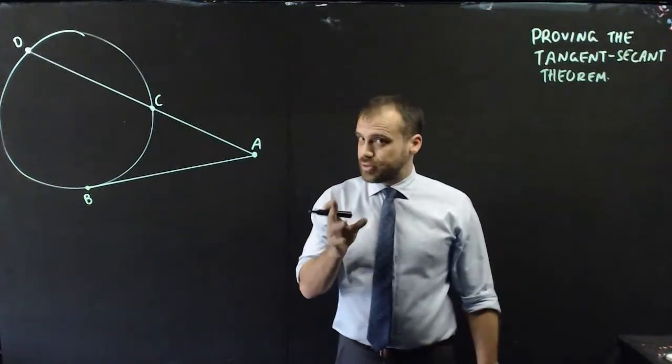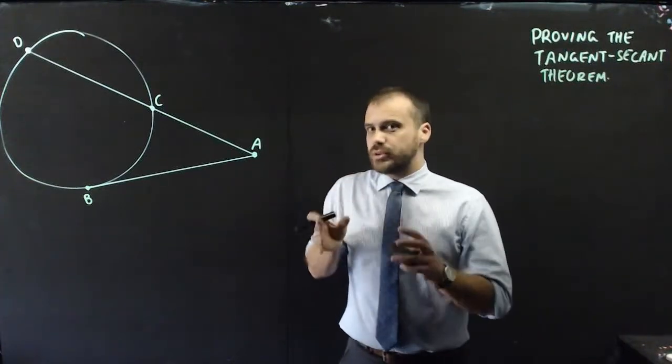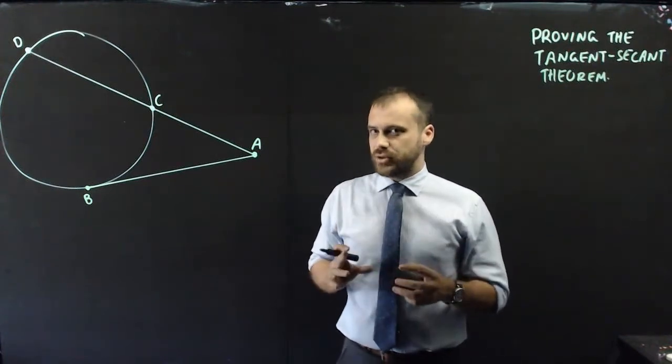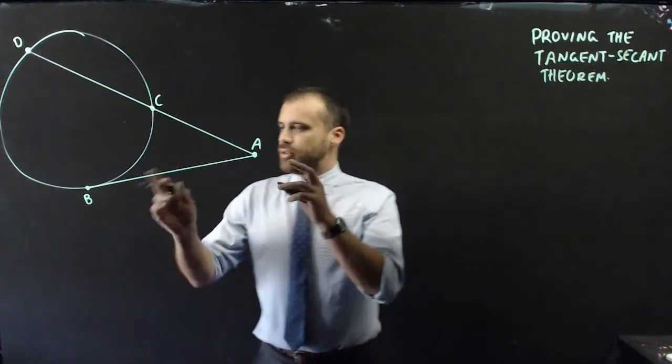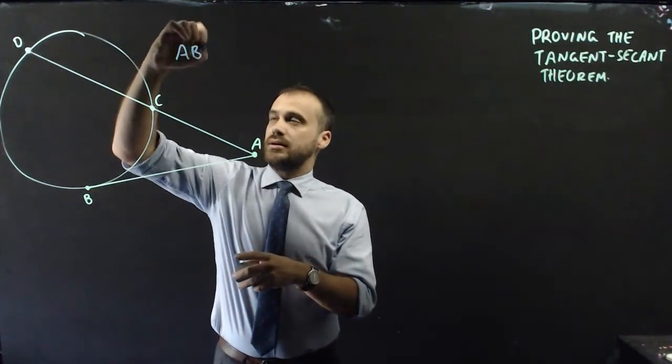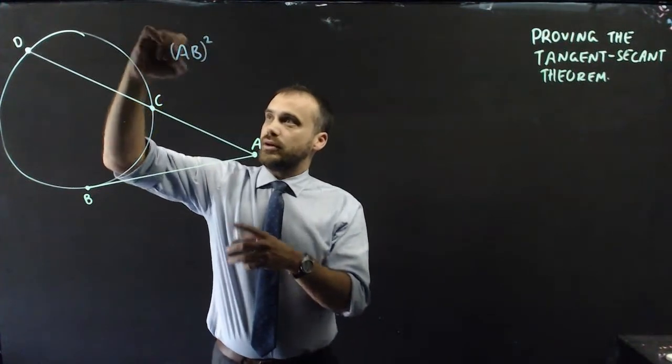We're going to be proving the tangent-secant theorem here and walk you through what the theorem is first of all, because students always make a mistake on it. So be really careful. The theorem says that if we take this length AB and we take that length and we square it...